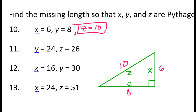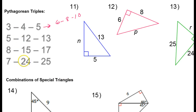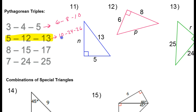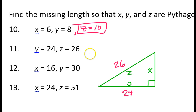What about the next one? 24 and 26 — y is 24 and z is 26. Let's compare those to our triples. I don't see a 26 on any of these, however imagine if we doubled the 5-12-13 triple. We would get 10, 24, and 26. Looking here, I have 24 and 26, so the other side must be 10. So x must equal 10.